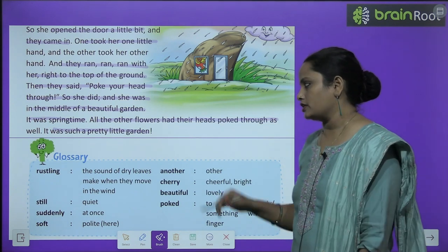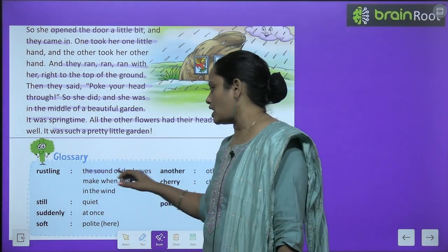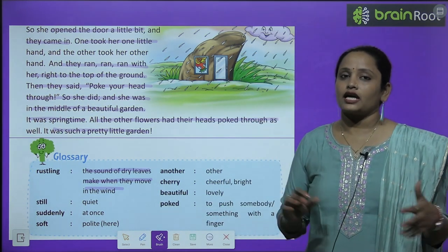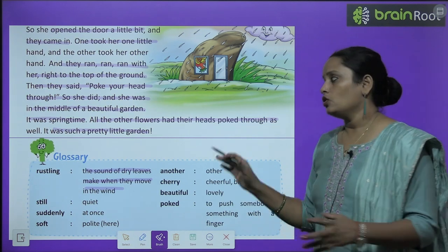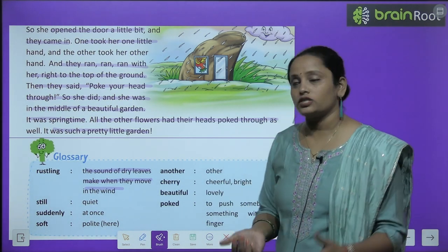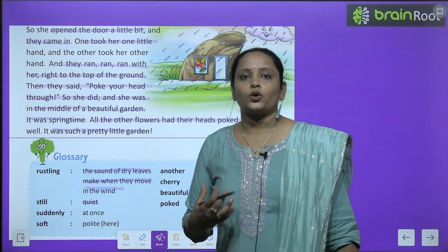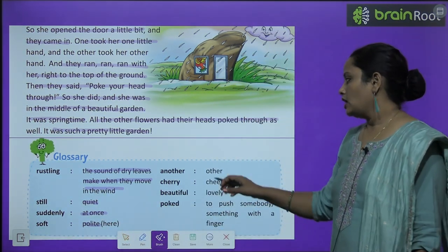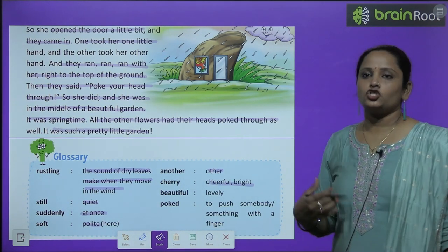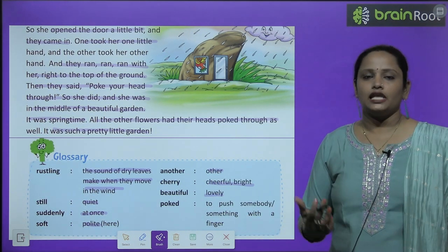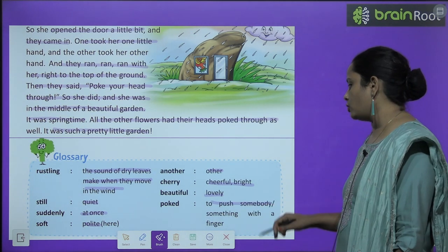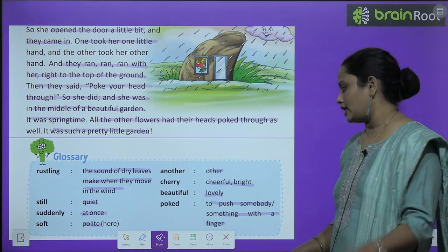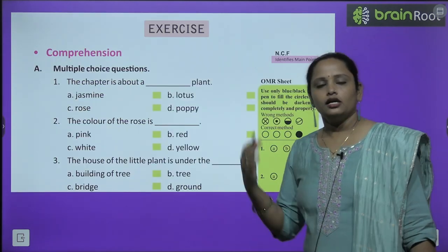Now children, let's move on to the glossary. The first word is 'rustle' — rustle means the sound dry leaves make when they move in the wind. 'Still' means quiet. 'Suddenly' means एकदम से, अचानक से। 'Soft' means polite. 'Another' means दूसरा। 'Cheery' means cheerful or bright. 'Beautiful' means lovely. 'Poked' means to push somebody or something with a finger.